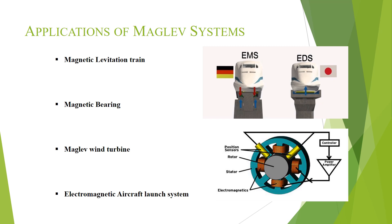The third application is the maglev wind turbine. This type of wind turbine can be 31 percent more efficient than conventional wind turbines. And last but not the least, there is the electromagnetic aircraft launch system, which can achieve better acceleration and lesser stress in the airframe of the aircraft system.